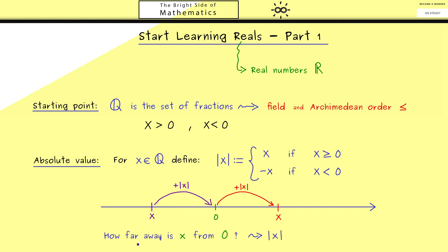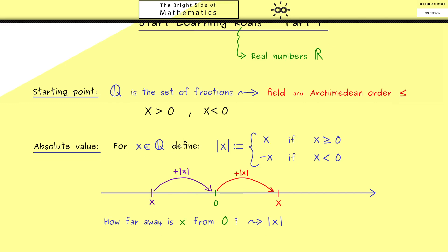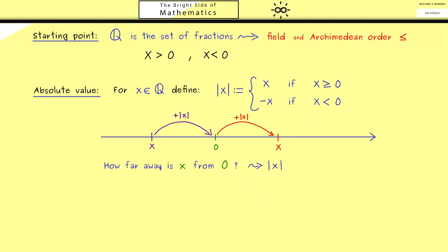So if you want to know how far away x is from 0 you just take the absolute value. This measuring of distances will be very important for our construction of the real numbers. Now you might rightfully ask why we even want new numbers. Of course in every region we choose on the number line we have infinitely many rational numbers there, but still there are points on the number line that are not in the set Q. For example we don't find a rational number x such that x squared is equal to 2.